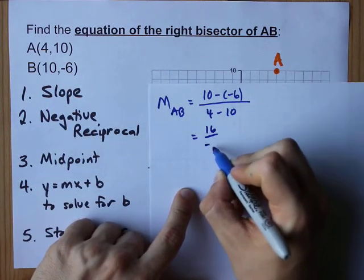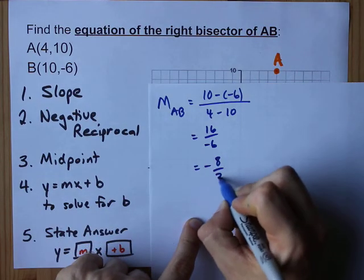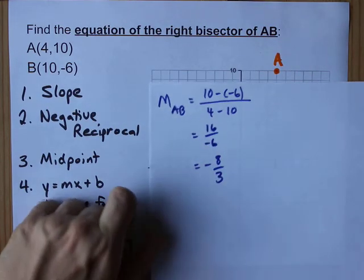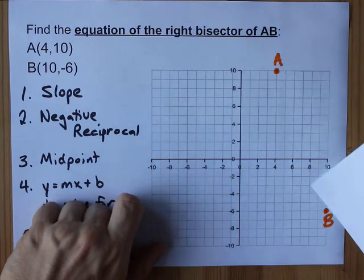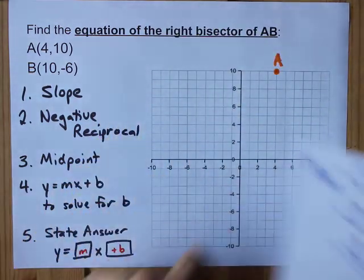I get 16 over negative 6. That reduces to negative 8 over 3. That's the slope from A to B. That makes sense because it is going down.